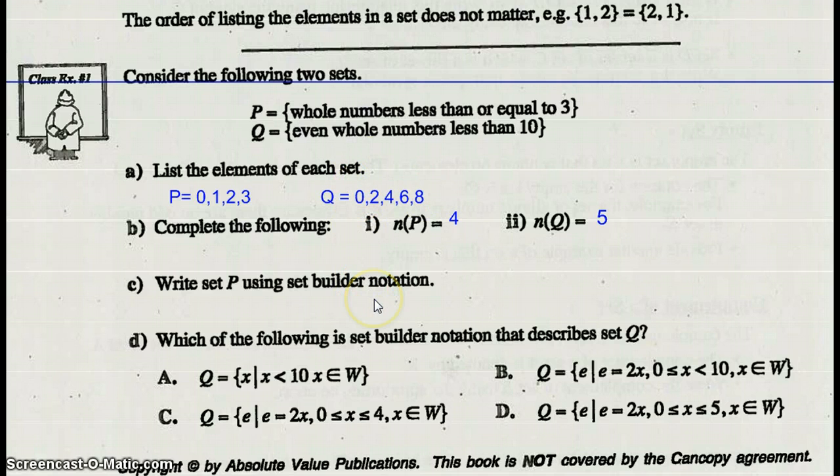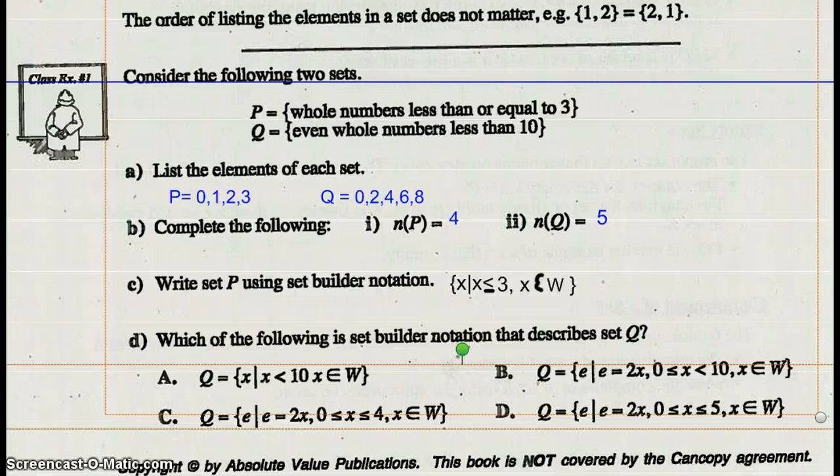Write set P using set builder notation. So set P in set builder notation should be X such that X is less than or equal to 3, X is an element of the whole numbers.